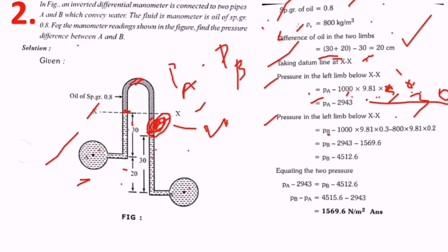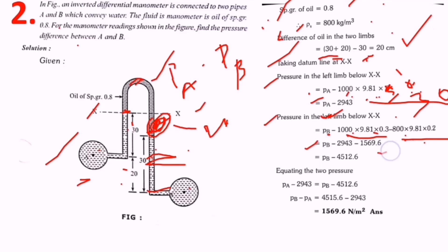Pressure in the right limb below XX equals pb minus rho one times g times h1 minus rho two times g times h2, where rho two is 800 (oil density) and h2 is 0.20 meters. This gives pb minus 2943 minus 1569.6, equaling pb minus 4512.6 as equation two. Equating the two: pa minus 2943 equals pb minus 4512.6, so pb minus pa equals 4512.6 minus 2943, giving a pressure difference of 1569.6 Pa.